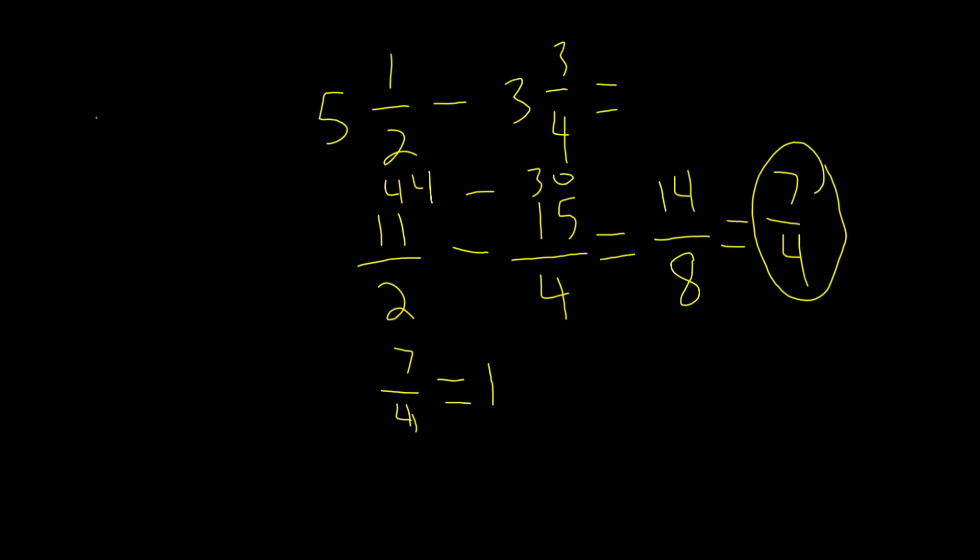We keep the denominator as is and we multiply 1 times 4 is 4, 7 minus 4 is 3. So our answer in mixed number form is 1 and 3 fourths. And that's our answer.